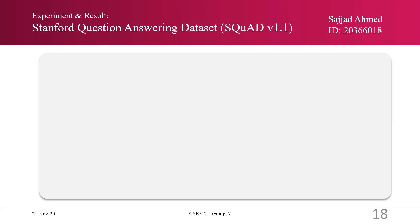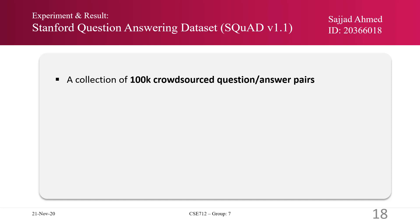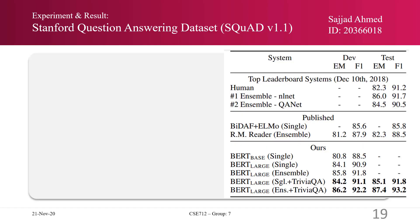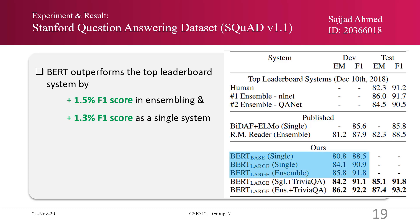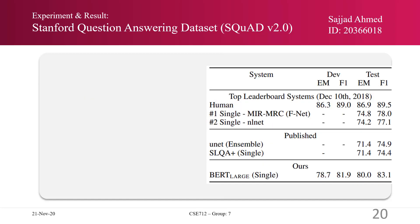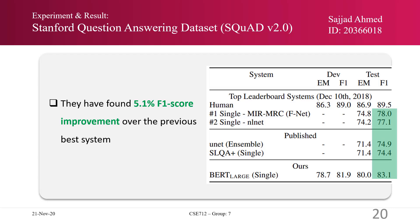Next, they considered the Stanford Question Answering Dataset, SQuAD version 1.1, a collection of 100K crowdsourced question-answer pairs. They fine-tuned for three epochs with a batch size of 32 and a learning rate of 5e-5. BERT outperforms the top leaderboard system by 1.5% F1 score as an ensemble and 1.3% F1 as a single system. Without TriviaQA fine-tuning, it only loses 0.1 to 0.4% F1. They also performed experiments on SQuAD version 2.0, finding a 5.1% F1 score improvement over the previous best system.